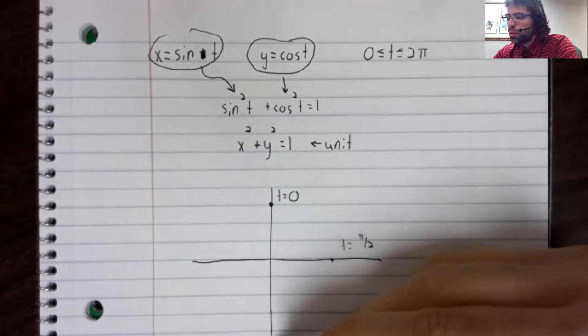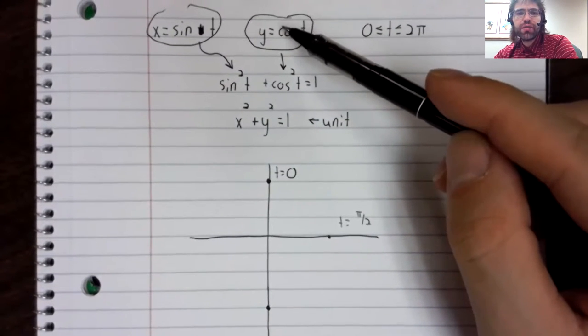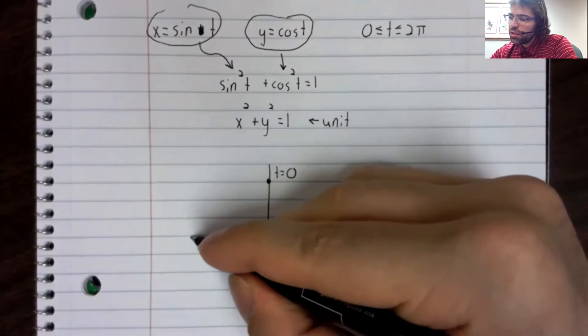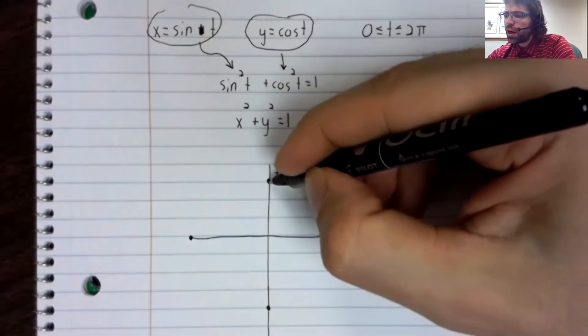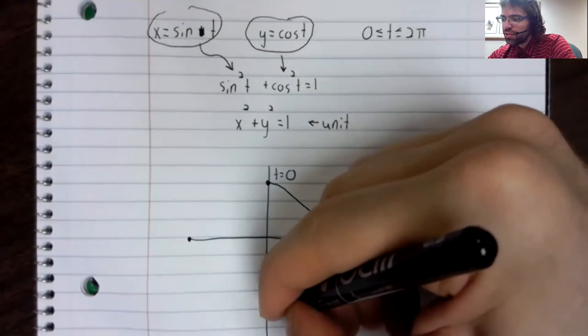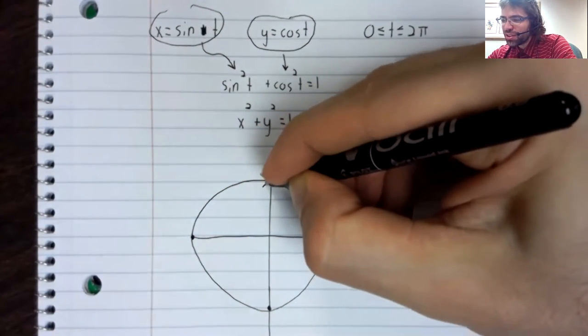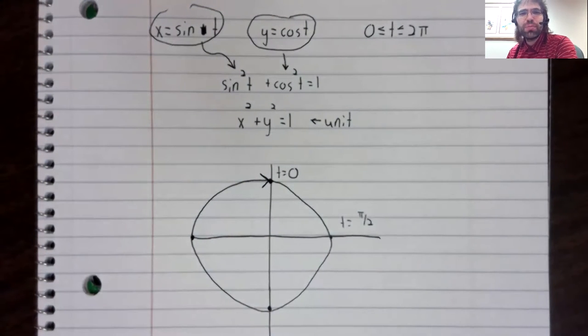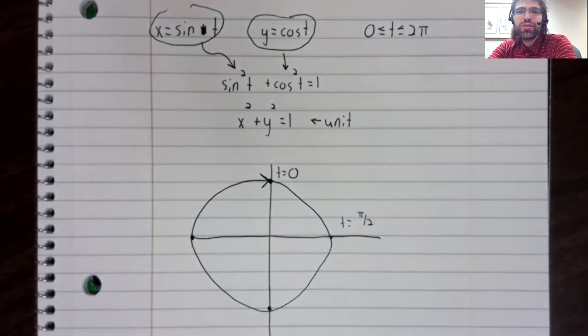T equals pi. The sine is zero, the cosine is negative one. Three pi over two, two pi. So this is going to look, my artistic skills are truly poor, but we travel once around the unit circle, starting here and going in the clockwise direction.